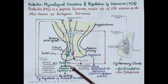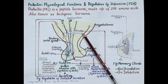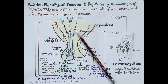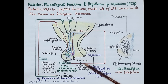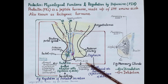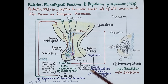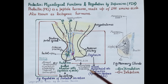Increased prolactin during lactation suppresses the hypothalamo-pituitary gonadal axis. This inhibits the release of GnRH — gonadotropin releasing hormone — from the hypothalamus, which further reduces the release of FSH (follicle stimulating hormone) and LH (luteinizing hormone) from the anterior pituitary. Reduced FSH and LH cause amenorrhea, that is absence of menstruation, inhibition of ovulation, and this results in infertility for several months postpartum — that is after the delivery of the child.